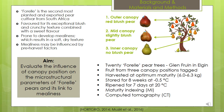In this study, 20 Forelle pear trees were selected at Glen Froma in Elgin, the Western Cape. Fruit from three different canopy positions were tagged: the outer canopy red blush pears, slightly blush pears from the middle canopy, and fruit with no blush from the shaded inner part of the canopy.